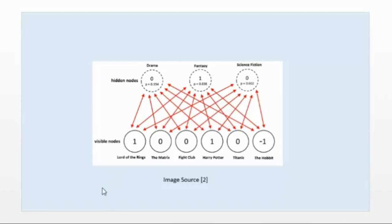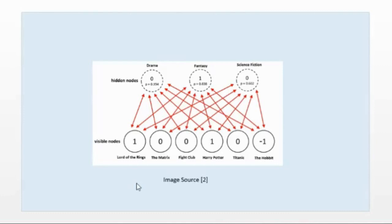The user provides ratings: Lord of the Rings gets one, The Matrix gets a value, and so on. A value of minus one means the user has not provided a rating or has not watched the movie yet. Under the hidden layer, we have three latent factors: drama, fantasy, and science fiction — these are the hidden nodes.